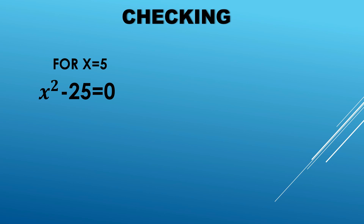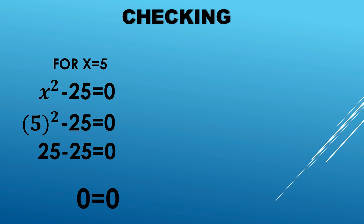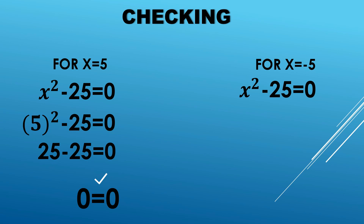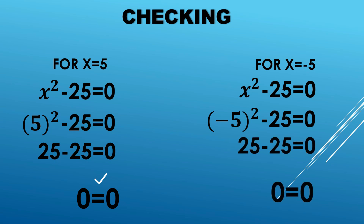To check if these values satisfy the equation, we substitute both into the original equation x squared minus 25 equals zero. For x equals 5: 5 squared minus 25 equals zero → 25 minus 25 equals zero → 0 equals 0. It satisfies the equation. Both values satisfy the equation, so positive 5 and negative 5 are indeed roots of this equation.